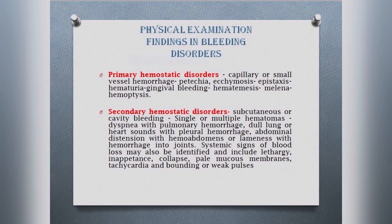The physical examination findings can vary. In thrombocytopenic disorders, it is usually petechiae, ecchymosis, or even epistaxis — that is, blood through the nostrils. There can be blood in urine or blood in vomitus. In short, the level of bleeding is at a capillary level.